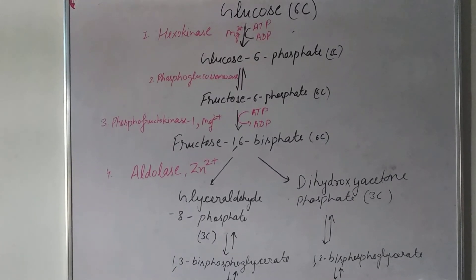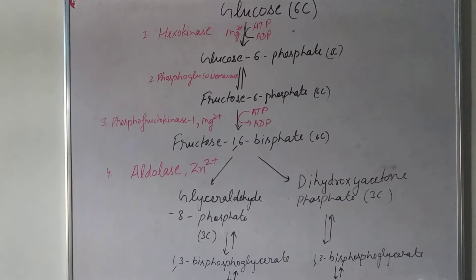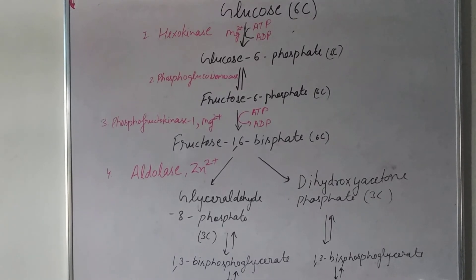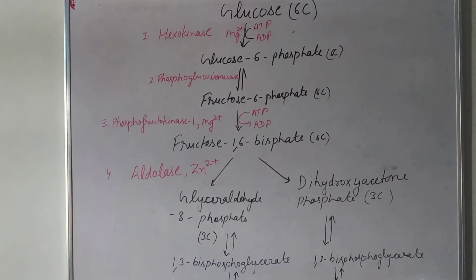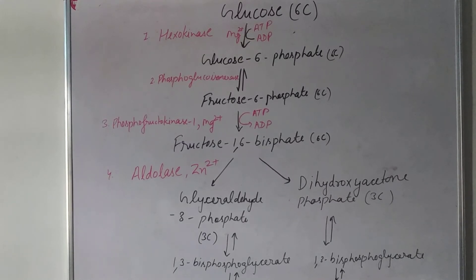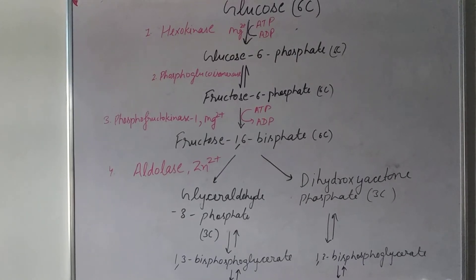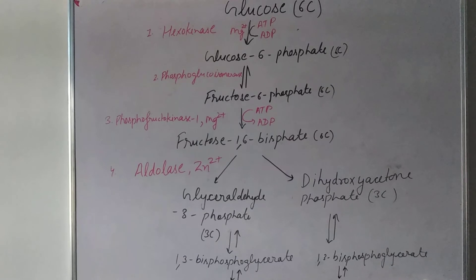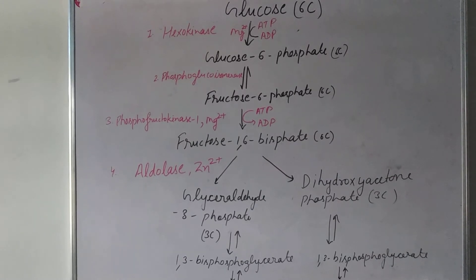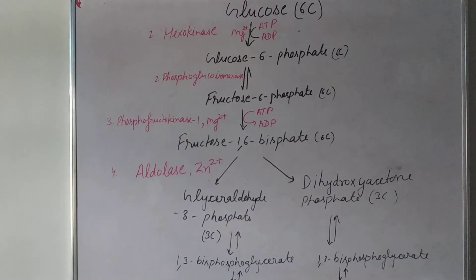Fructose-1,6-bisphosphate is formed. In the further reaction, the 6-carbon compound breaks down into two 3-carbon compound molecules using an enzyme called aldolase, which has zinc 2+ present.